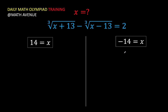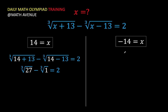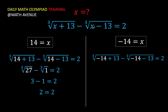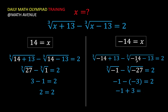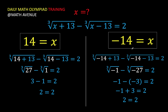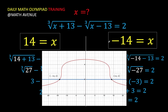To check for extraneous roots, we substitute both values into the original equation. When x equals 14, we arrive at a correct equation. When x equals negative 14, we also arrive at a true equation. The graph confirms this — the red curve intersects the line y equals 2 at x equals negative 14 and x equals positive 14. So both are valid roots. Thank you very much, this is Lando Assistant — we hope to see you again in our next math training here at Math Avenue.